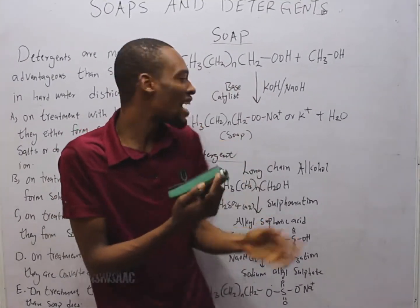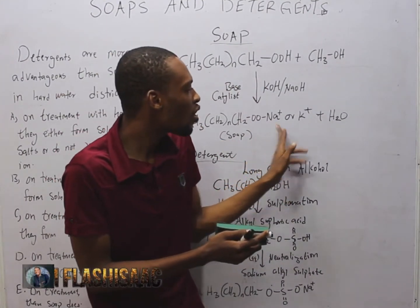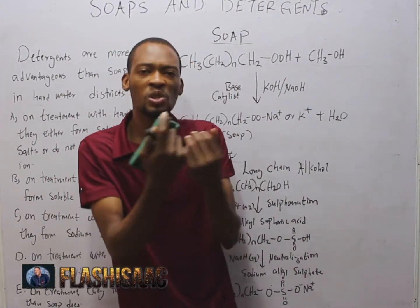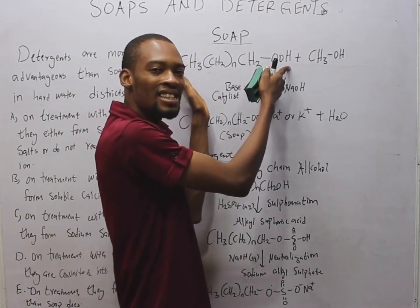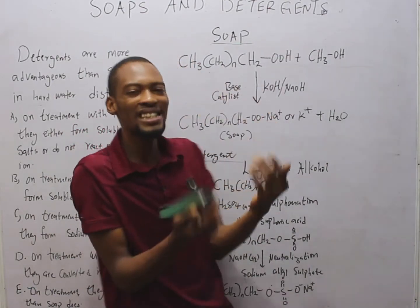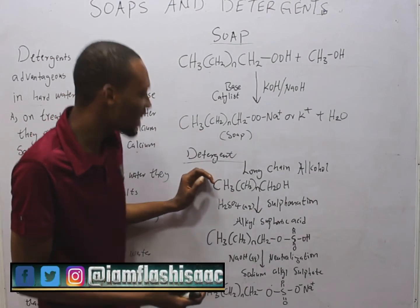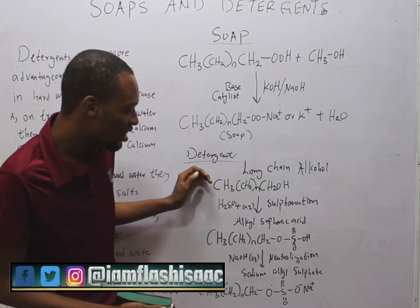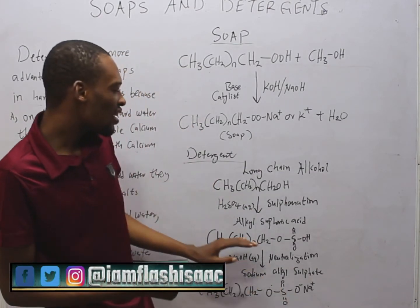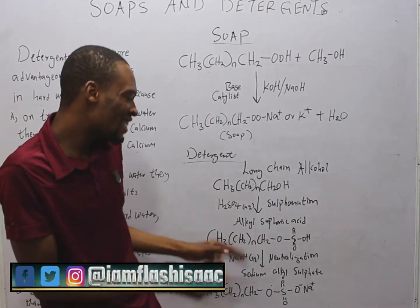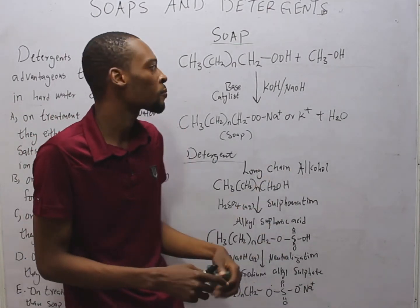Soaps are sodium or potassium salts of long-chain fatty acids, or carboxylic acids. Meanwhile, detergents are sodium salts of long-chain alkyl sulfonic acids.